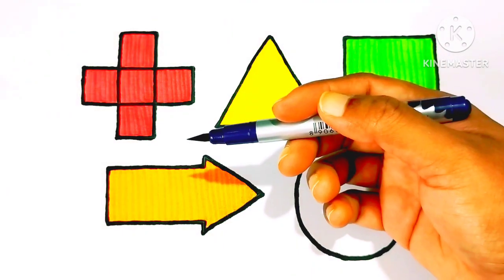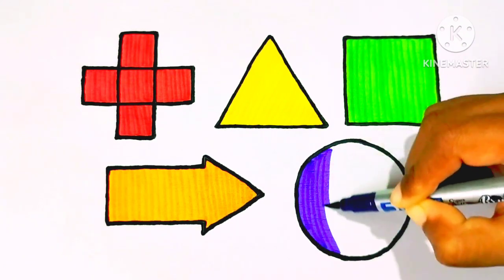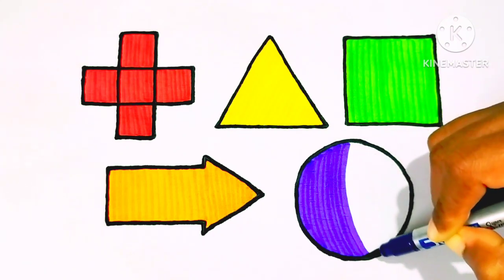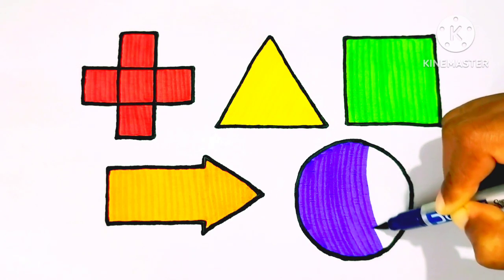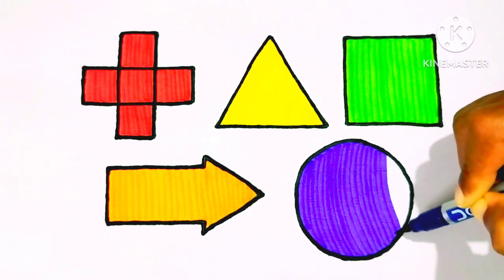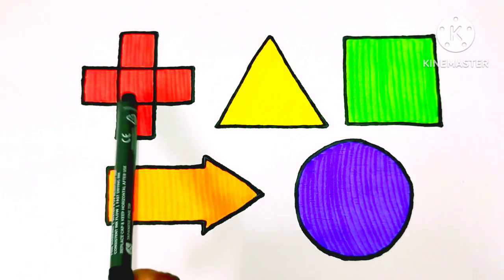Purple color. Purple color circle. B, C, D, E, F, G, H, I, J, K, L, M, N, O, P, Q, R, S, T, U, V. Plus.